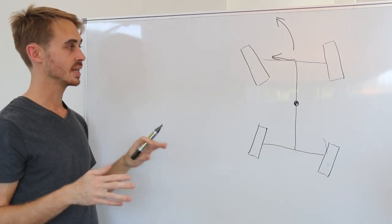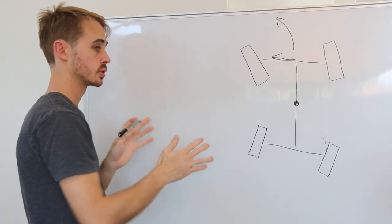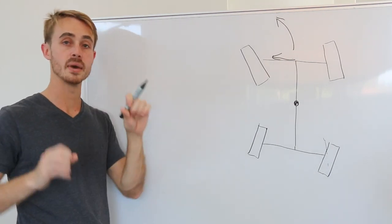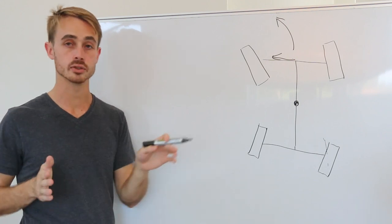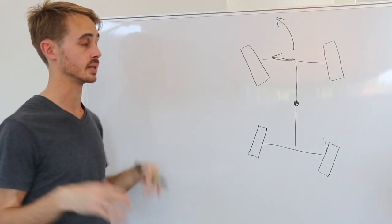So what we can do instead is shorten the time that it takes to yaw into the corner and this will also give us a better driver feel of transient response because the car will rotate faster. Now how do we do that?